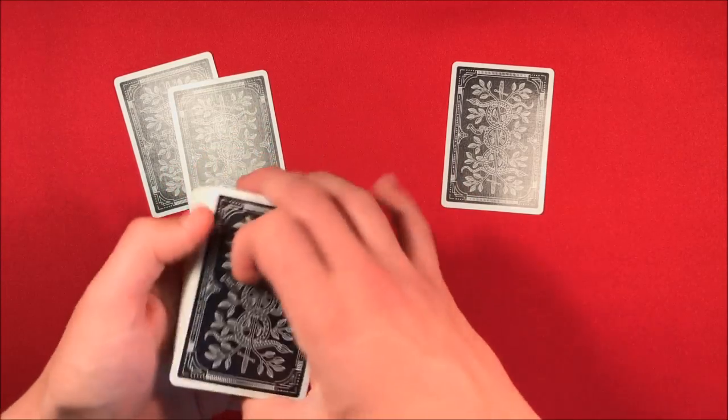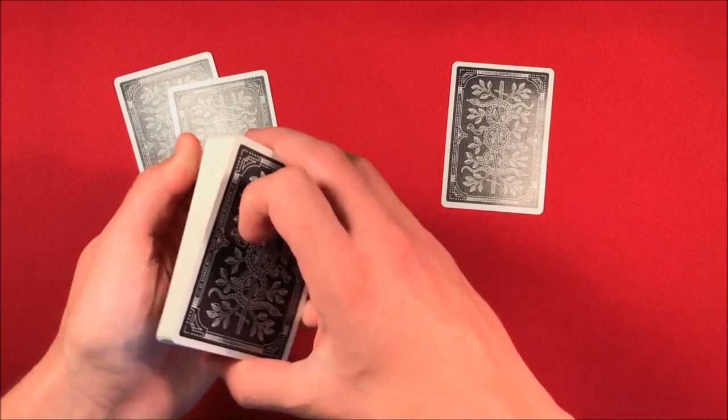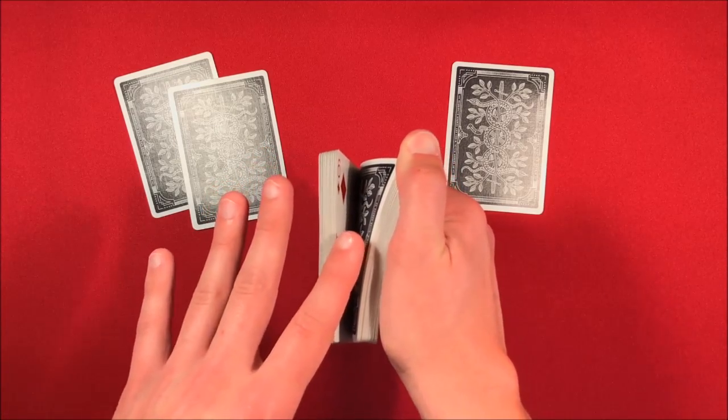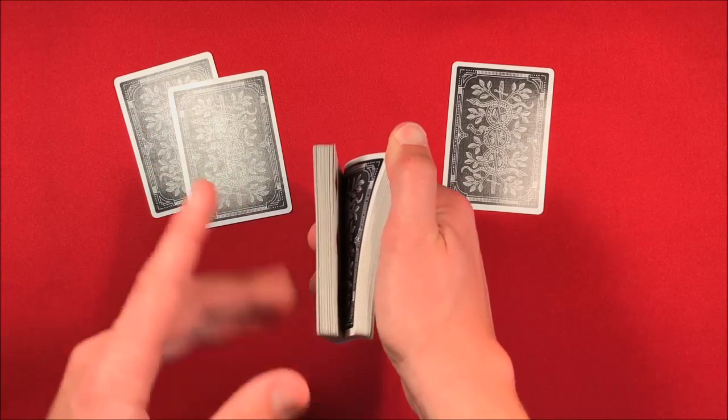Same thing - you can tell the spectator to say stop anywhere they like, and you want to make sure that they know they have all the power in choosing their card. Because a lot of times when you're spreading the cards, the spectator is going to feel they have more influence on their own choice. The whole thing here is make sure that they know that wherever they say stop is actually where you're taking the card.